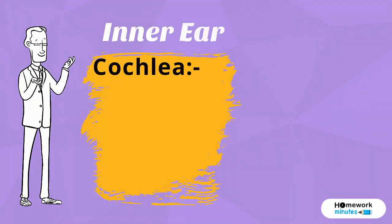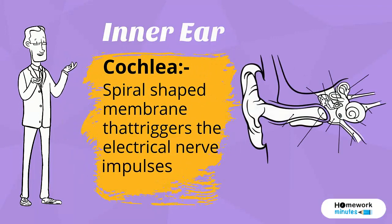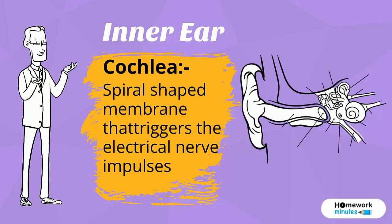The inner ear contains the cochlea, a spiral-shaped membrane that triggers electrical nerve impulses.